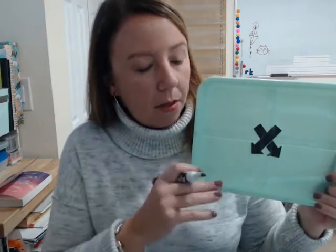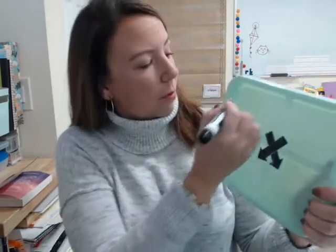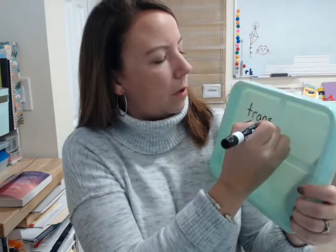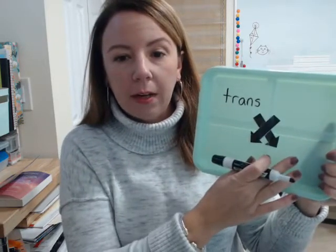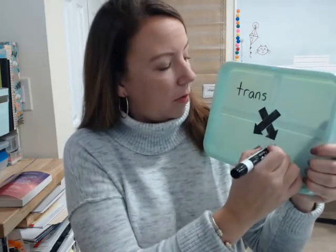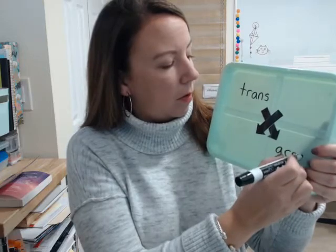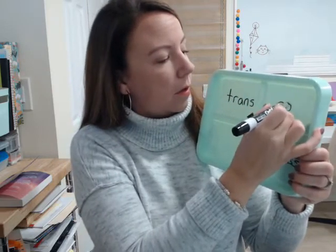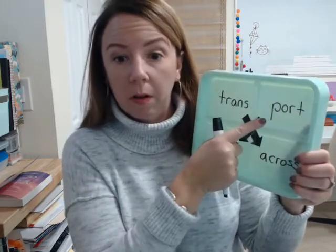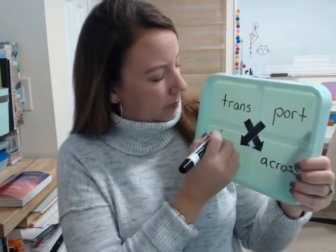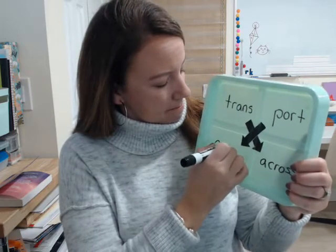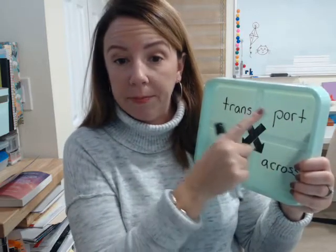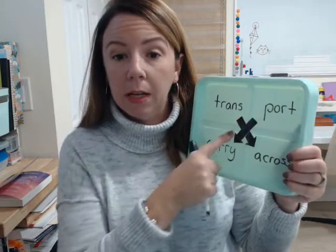So let's start with 'transport.' This is a dry erase surface — I've already tried it out. 'Trans,' pointing to this arrow down here, means 'across.' And then 'port' — I'll put the meaning here. Transport: trans = across, port = carry.